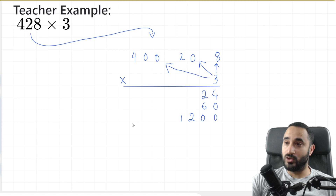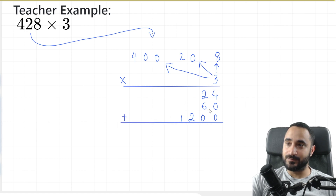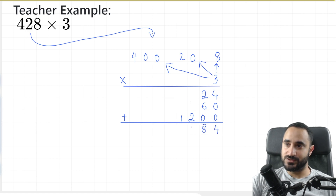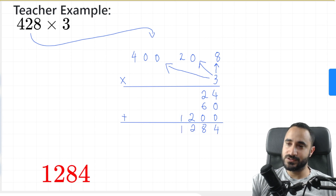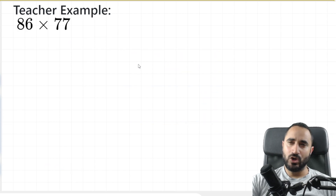Now we rule off again, and we're going to go ahead and add these numbers here. So 4 plus 0 plus 0 is 4. 2 plus 6 is 8. And then nothing plus 2 is 2, and nothing plus 1 is 1. And this is our final answer — and if we check our answer, there it is. Now let's do another example.